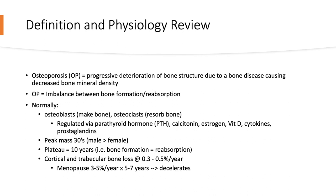Basically, there is an imbalance between bone formation and reabsorption. Normally, osteoblasts that make bone and osteoclasts that resorb bone are in harmonious regulation, and this is regulated via parathyroid hormone. However, calcitonin, estrogen, vitamin D, cytokines, prostaglandins, and multiple other factors are also involved.